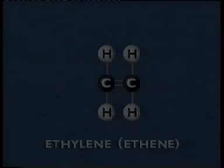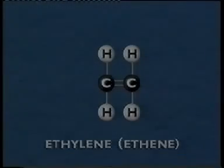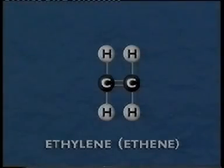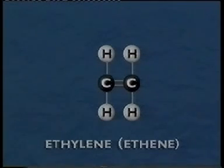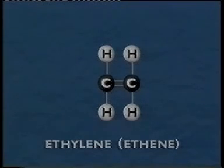They're all made by joining together single molecules, monomers, to form long chains. Here, the monomer is ethylene, also called ethene. It is composed of two carbon and four hydrogen atoms.